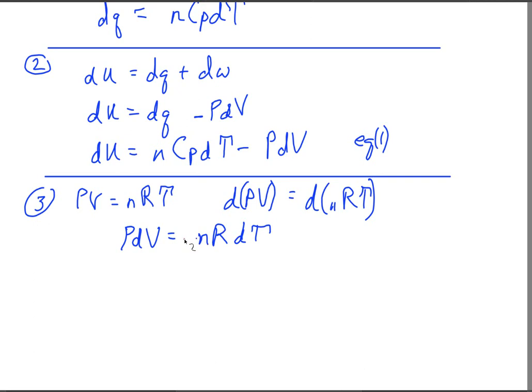And we can substitute this back into equation one for PdV. So that will give us dU is equal to N, I'm sort of copying equation one,